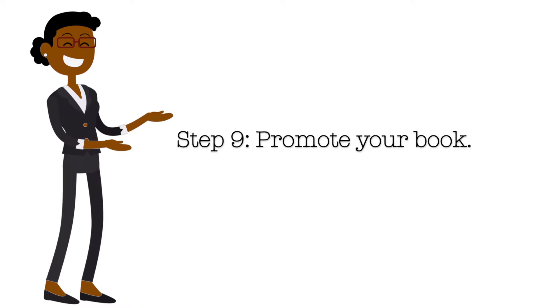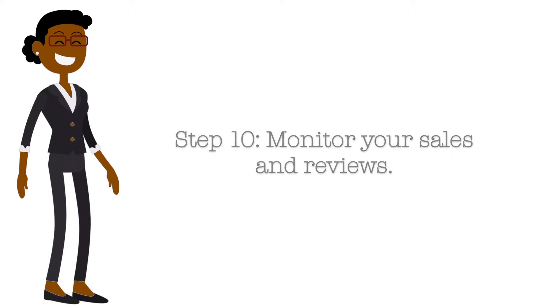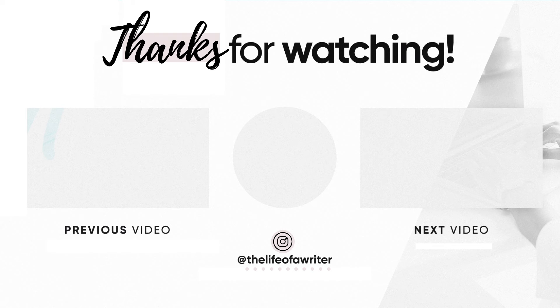Step number nine is to promote your book. Once your book is published, it's time to start promoting it to readers. There are many different ways to promote your book including using social media, setting up a website, and reaching out to book bloggers and reviewers. Step number ten is to monitor your sales and reviews. Once your book is published, your work is not done — you still need to monitor your sales and reviews to get an idea of how well your book is selling and what people are saying. Most self-publishing platforms provide tools for tracking sales and reviews.